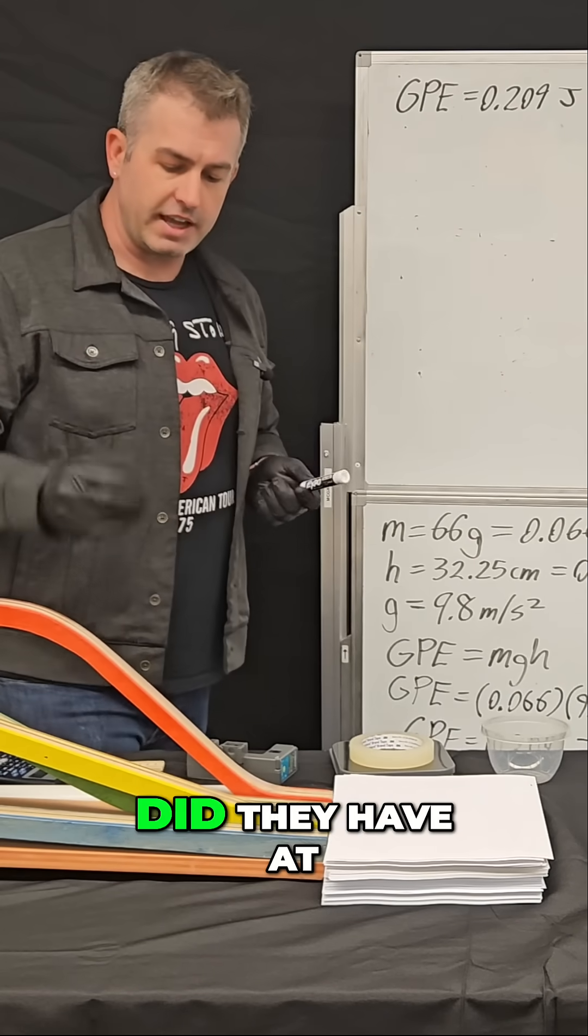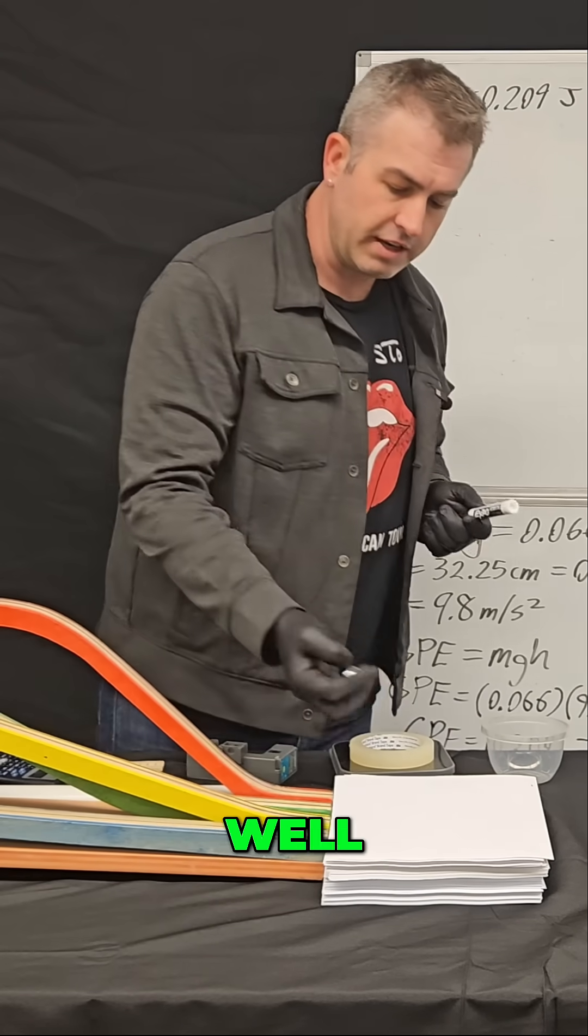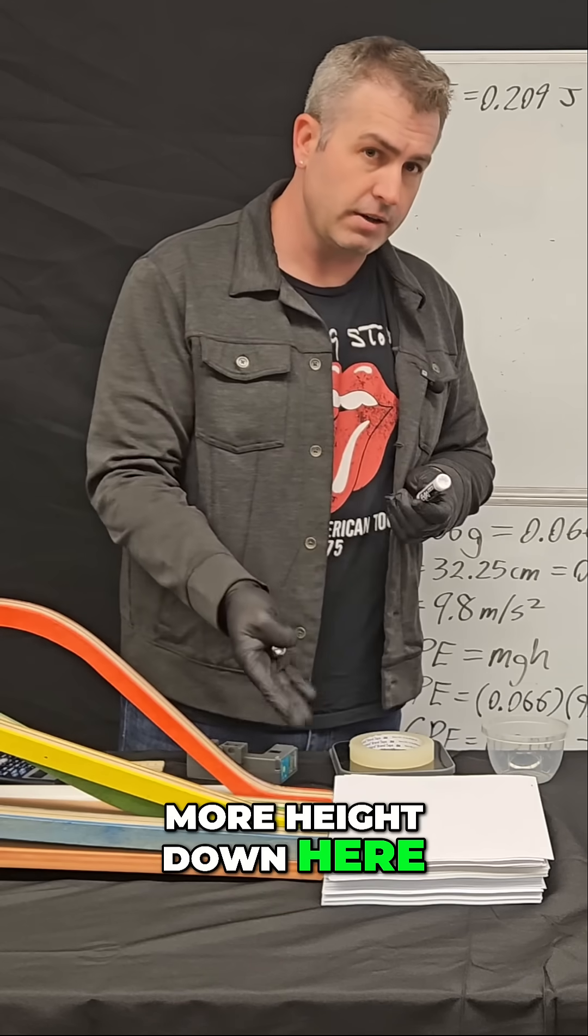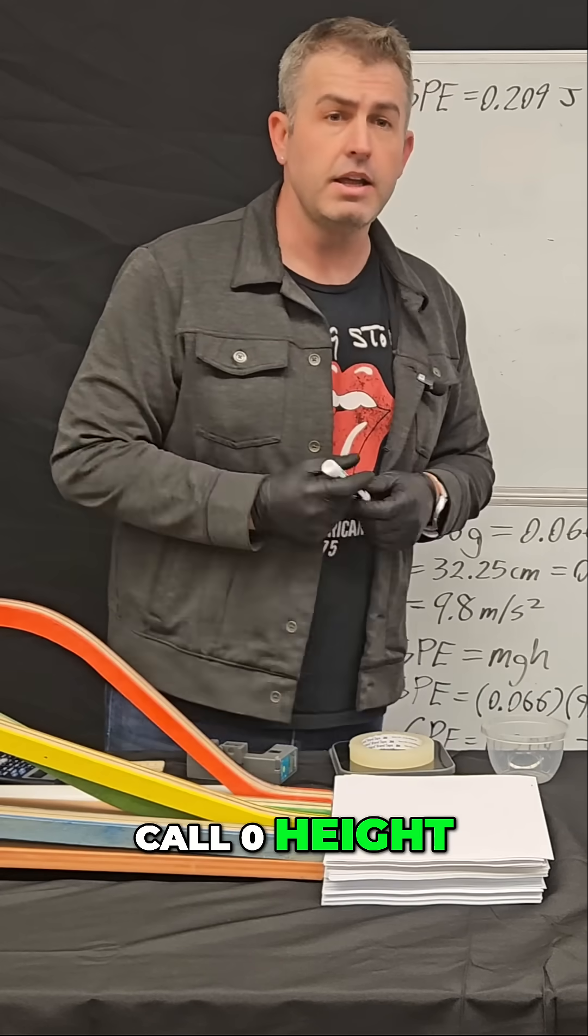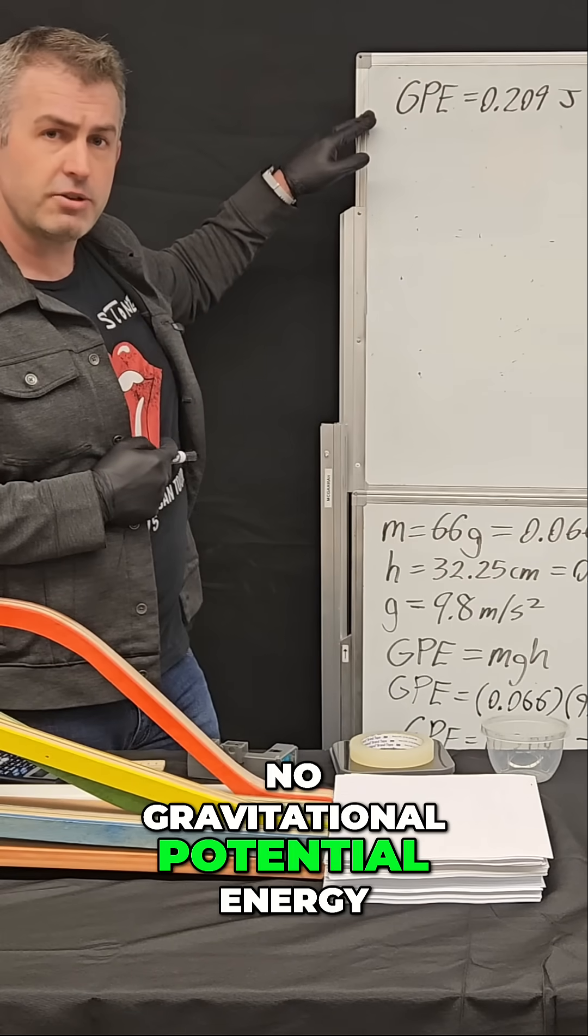What kind of energy did they have at the bottom? They didn't have any more height down here, because that's what we call zero height, which means they had no gravitational potential energy.